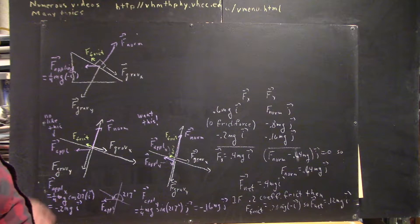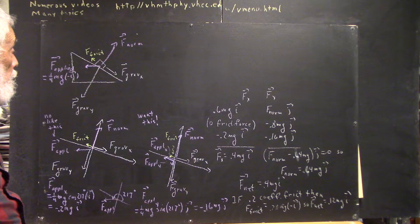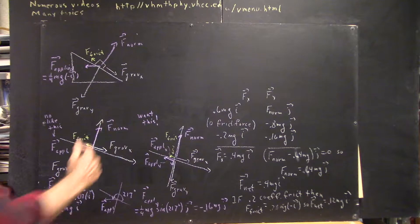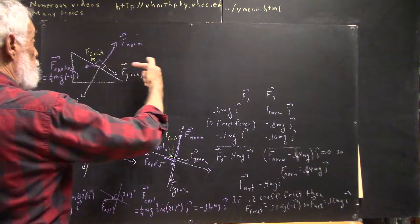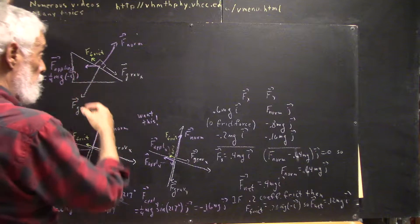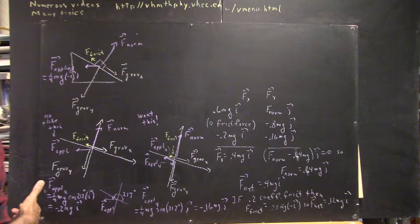Another situation, we again have our mass on the 37-degree incline. Same situation we just looked at, except that now we have an applied force in the horizontal direction. It's applied in the direction that tends to oppose motion down the incline, so it's going to have to be applied in this direction.